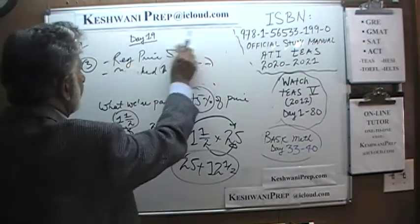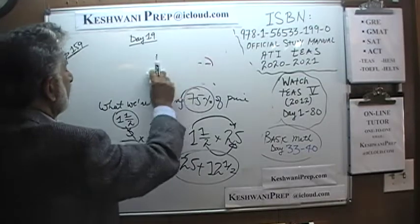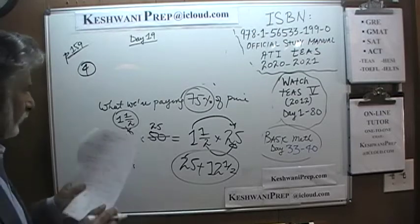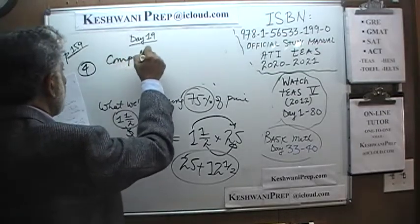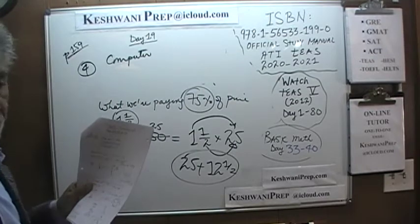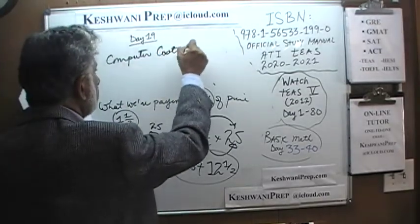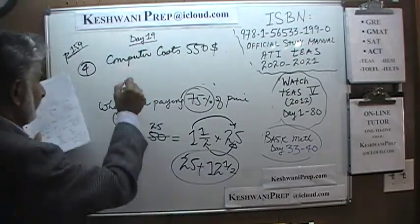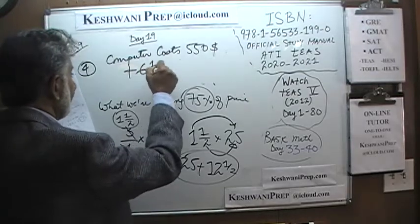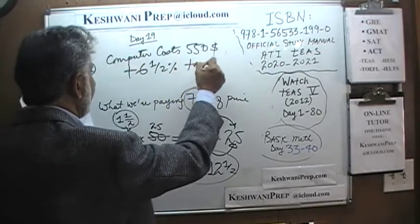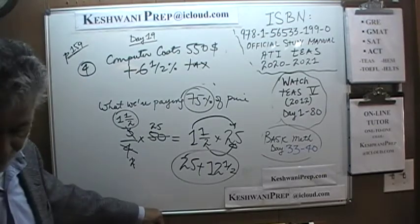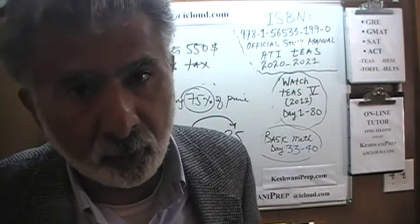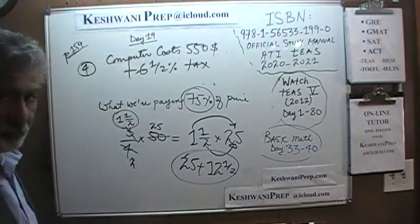Number four says that we are going to buy a computer that's going to cost us $550. Unfortunately we also have to pay sales tax of six and a half percent. The question is: how much are we going to pay in total for the item?